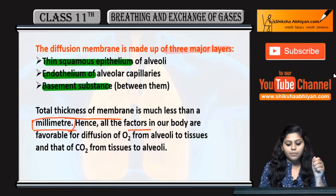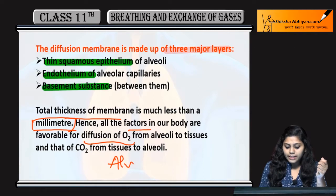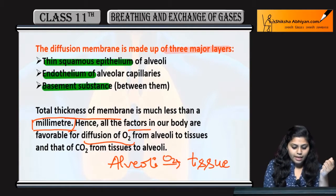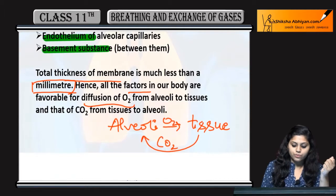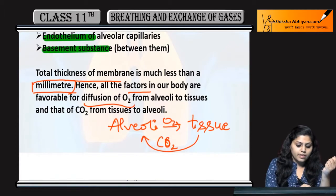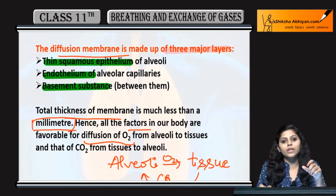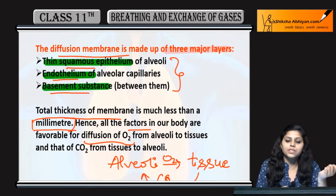Whatever factors in our body are favourable for diffusion — oxygen diffuses from the alveoli into the blood, and carbon dioxide diffuses from the tissues back to the alveoli. This gas exchange happens across the diffusion membrane. The tissues, like muscles, are lined by squamous epithelium, endothelium, and basement substance.